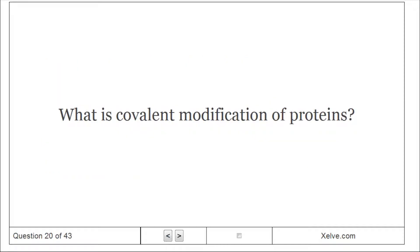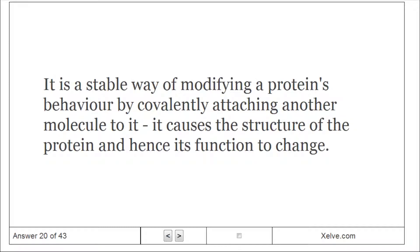What is covalent modification of proteins? It is a stable way of modifying a protein's behavior by covalently attaching another molecule to it. It causes the structure of the protein and hence its function to change.